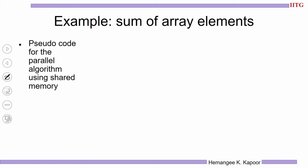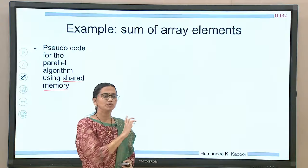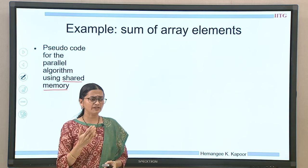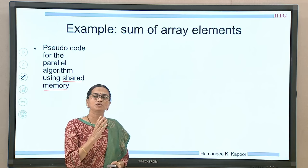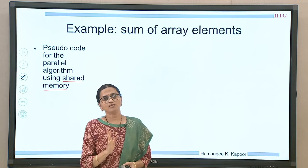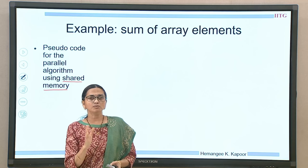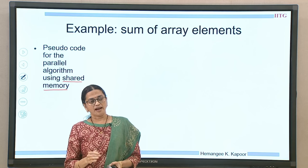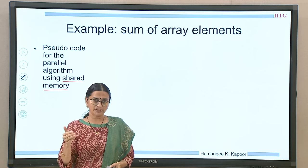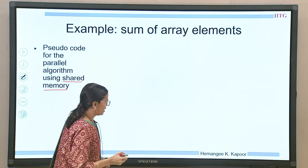Now we will understand how to do this in parallel. We have seen two parallel paradigms: shared memory and message passing. We will first try to write a program using the shared memory paradigm. As the shared memory paradigm says, we need to share some variables across the processes and we have multiple threads or processes to compute this final answer. First, we decide how many threads or processes we have, then divide the work across all of them, and once each process finishes its local work, we combine the results.